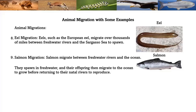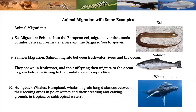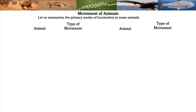Salmon migrate between freshwater rivers and the ocean — they spawn in fresh water, and their offspring then migrate to the ocean to grow before returning to their natal rivers to reproduce. Humpback whales migrate long distances between their feeding areas in polar waters and their breeding and calving grounds in tropical or subtropical waters. That summarizes the primary modes of locomotion in animals.